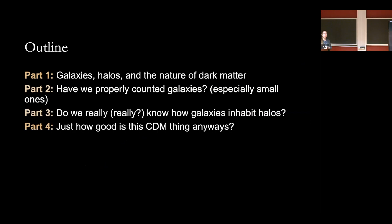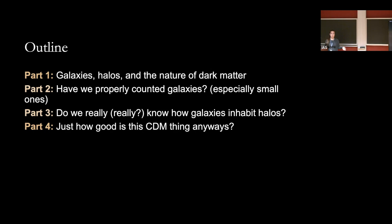The theme of this talk is: by measuring where dark matter is in our cosmos, we're going to find out what it is — fingers crossed — and we're going to use galaxies to do it. The outline is a four-part structure: the connection between galaxies and halos; whether we have properly counted galaxies; how well we understand how galaxies inhabit halos; and whether our standard cold dark matter model is a reasonable fit to observations so far.